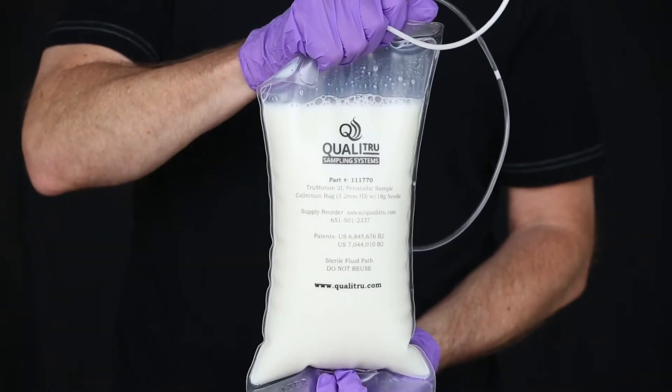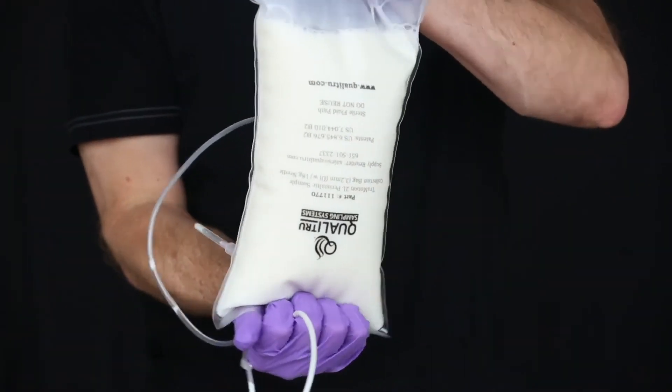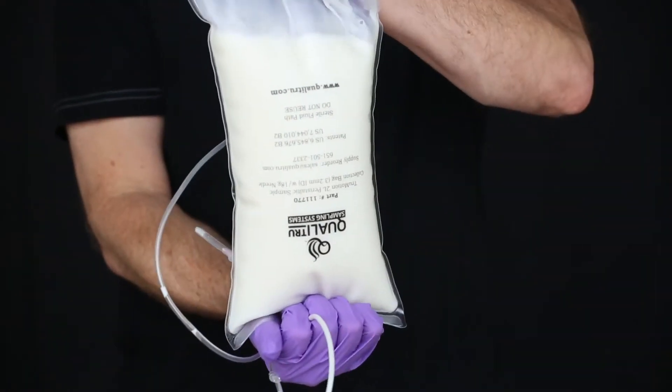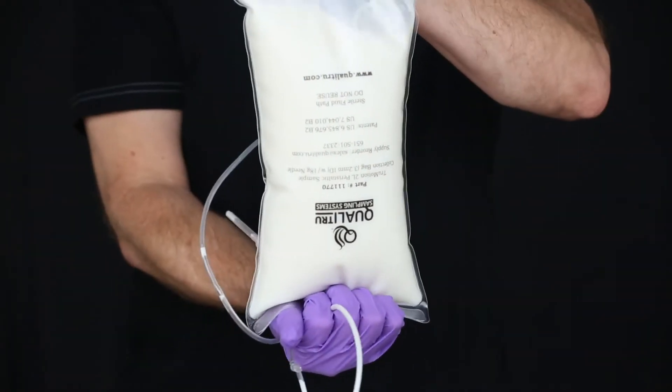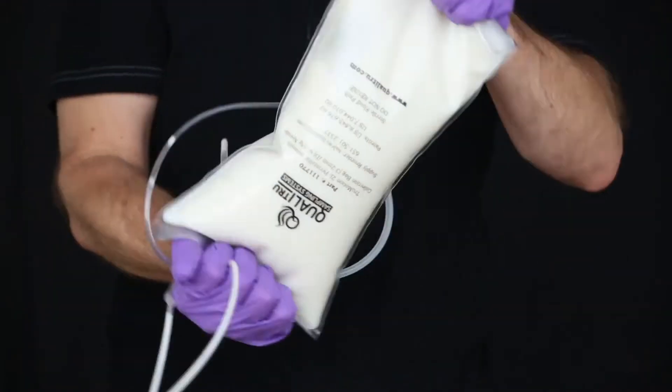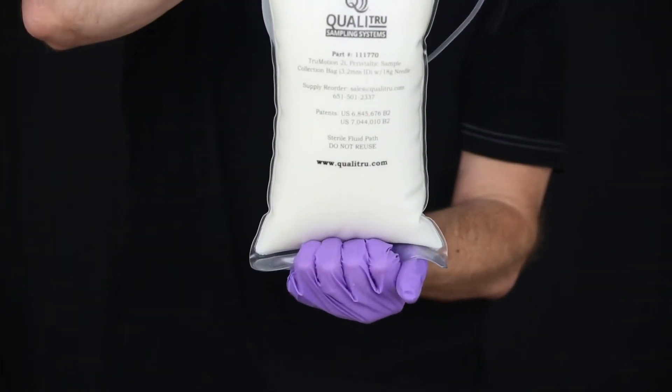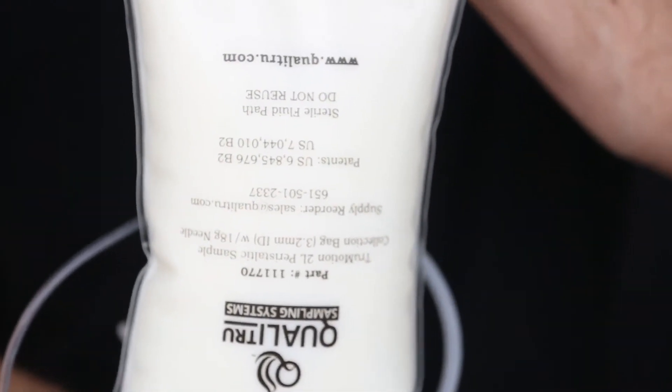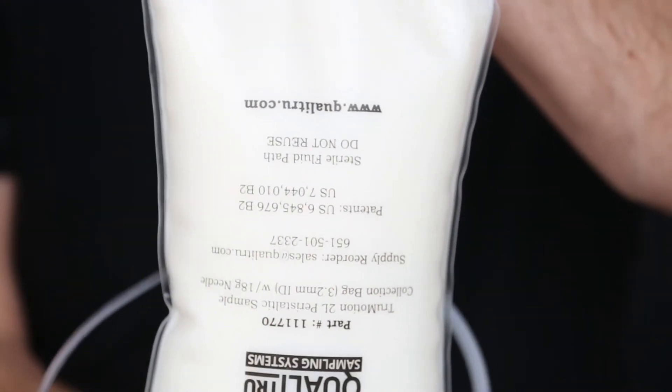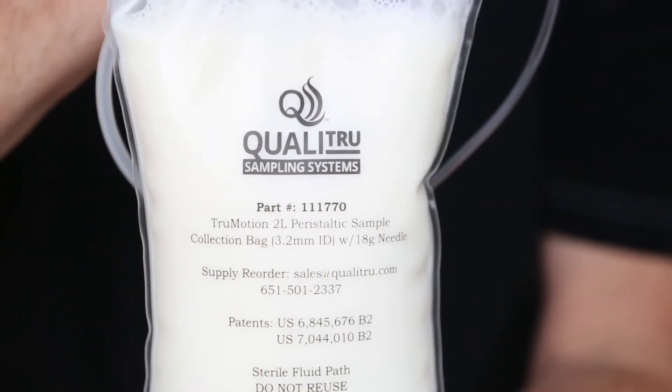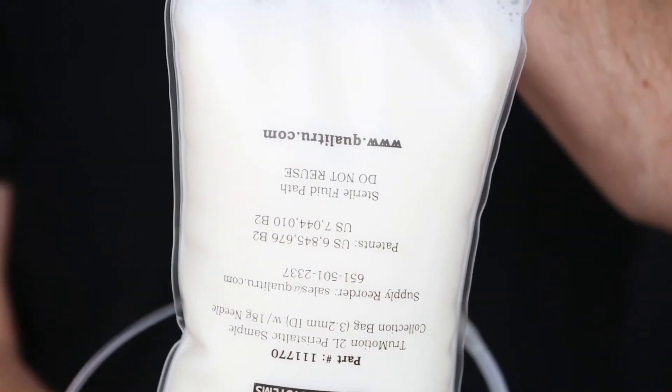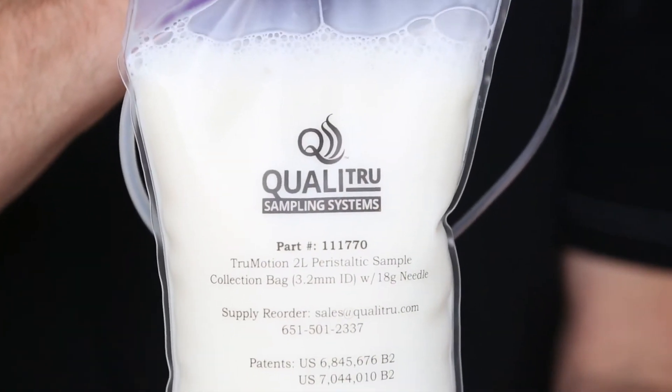The person certified to take the sample should remove the bag from the refrigerator and agitate the sample 25 times to ensure even distribution of the raw milk prior to filling the sample vials. For proper agitation, roll the bag 180 degrees upside down and then return upright, visualizing the butterfat cascading with each turn.